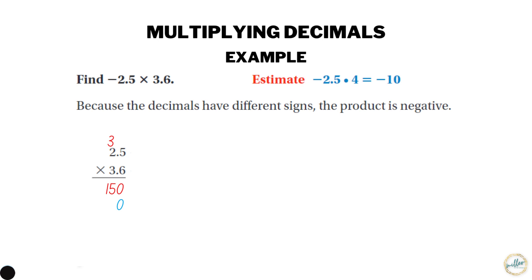Three times five is 15, so we put a five and carry the one. Then three times two is six, and adding the one gives seven. The next step is to add the two lines: 150 plus 750 is 900.